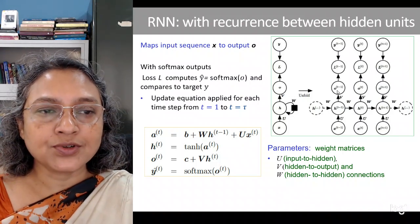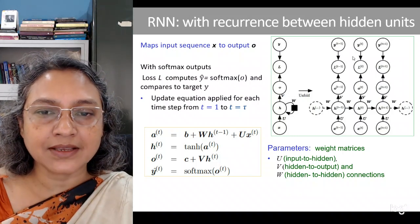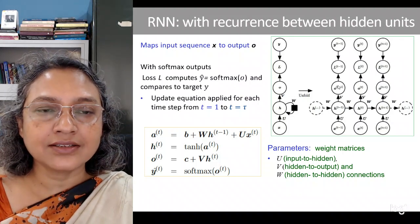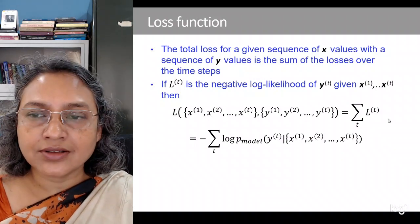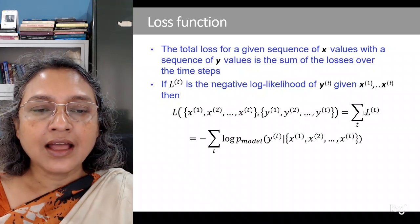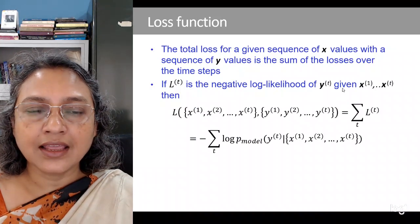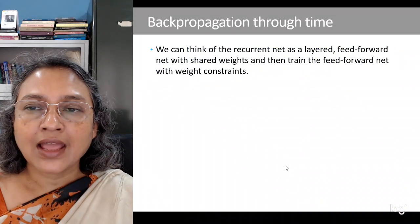O is the output and Y is the desired output. If we have a classification problem where at every time step we have a specific class as output, then the loss is obtained by taking y-hat as the softmax over this output. Based on the difference of y-hat and y at a particular time step, the loss at that time step is computed. Since we have output at every time step, the total loss may be considered to be the sum or average of the losses at different time steps. If we are dealing with cross-entropy loss, we can take L_t as the negative log-likelihood of y_t given all the inputs up to that time step.